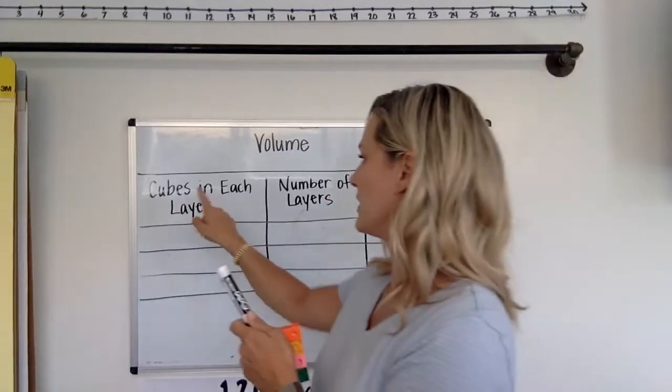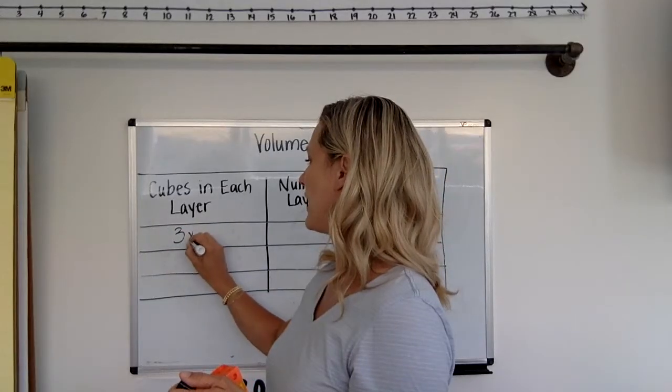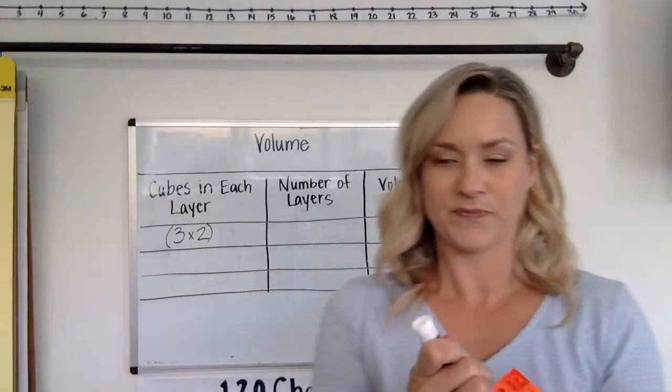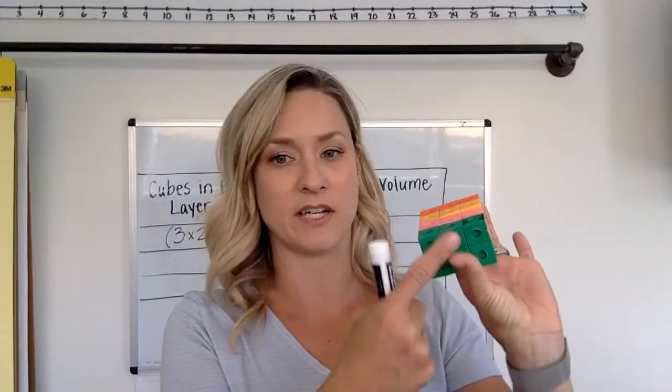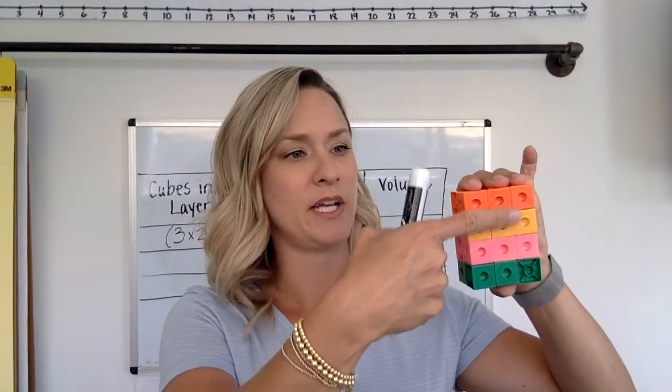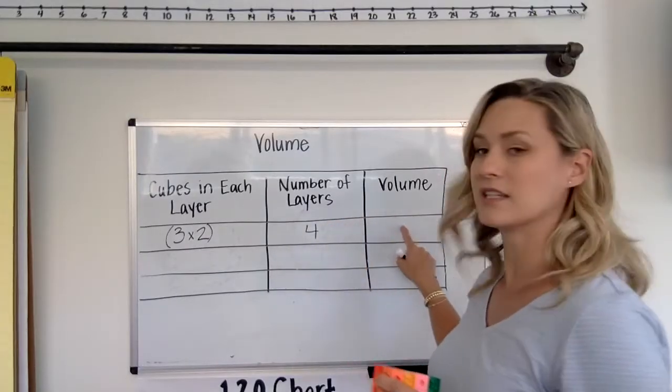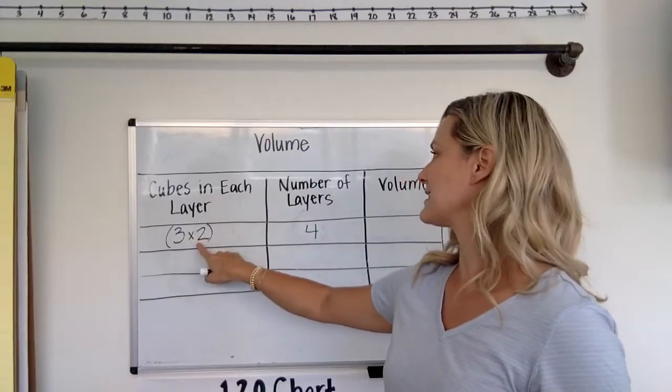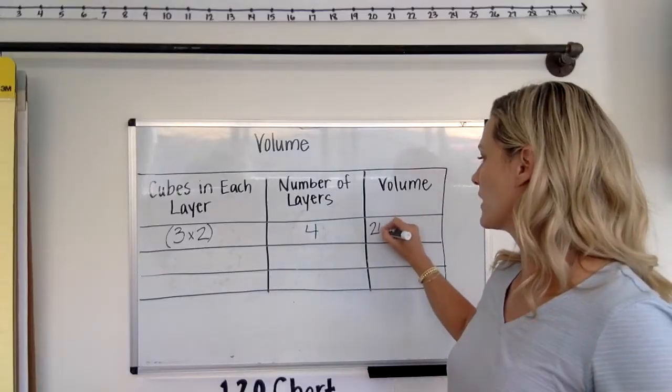I'm going to put 'cubes in each layer,' and I'm gonna put 3 by 2 because we know 3 times 2 is 6. Now check out the colors. We have to find out how many layers of 6 we have. This is one layer of 6 - one layer, two, three, and four layers. So I'm gonna put 4 here, and that's gonna tell us how many smaller cubes are in here.